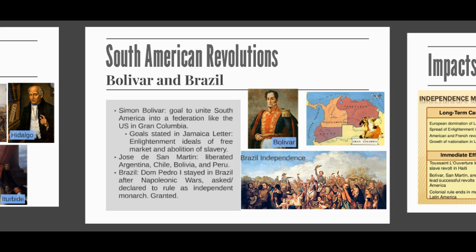In the Jamaica Letter, he writes: 'Generous souls always interest themselves in the fate of the people who strive to recover the rights to which the creator and nature have entitled them. And one must be wedded to error and passion not to harbor this noble sentiment.' Bolívar served as president of Gran Colombia from 1819 to 1830. This large area in northern South America was made up of present-day Colombia, Venezuela, Ecuador, northern Peru, western Guyana, and northwest Brazil.